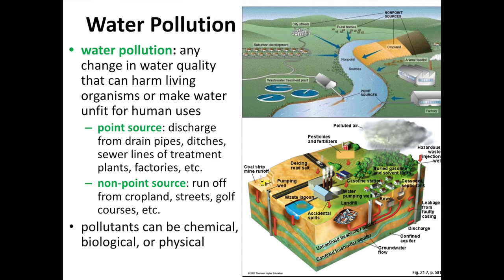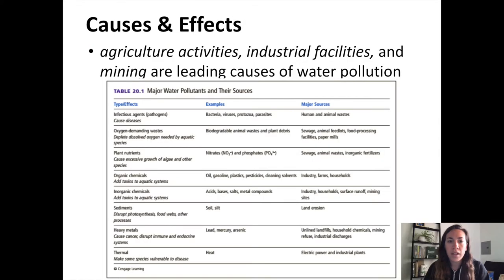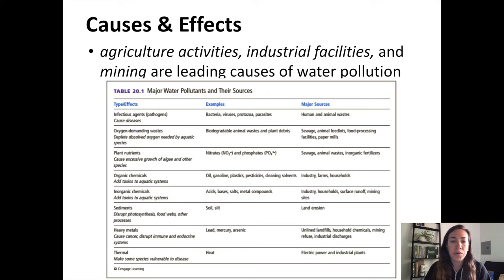These pollutants are going to be classified into several different categories. They can be chemical in nature, biological in nature, or physical in nature. There's a really useful chart in your textbook that classifies the type of water pollutant, gives examples of what we mean by each specific pollutant, and highlights major sources.